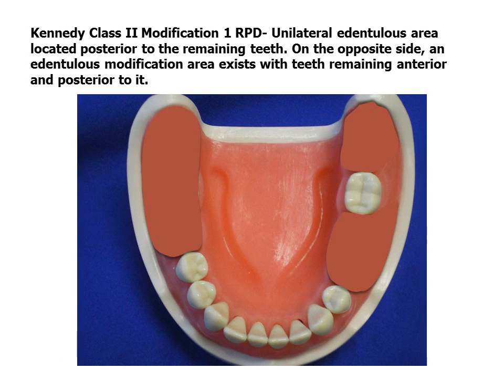This video describes a template for restoring the Kennedy Class II Modification I arch form. A unilateral, unbounded edentulous space defines it as a Kennedy Class II. The edentulous space on the opposite side is bound by teeth anteriorly and posteriorly, and is a modification space. Modification spaces are designated by the number of separate bounded edentulous spaces. If the third molars are missing and not to be replaced, they are not considered in the classification.